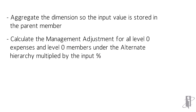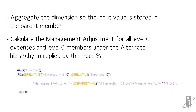To calculate management adjustment for expenses and level-zero members under the alternate hierarchy, the base input is multiplied by the management adjustment of the same percent. There you have an example of how the @sParentVal function is used.